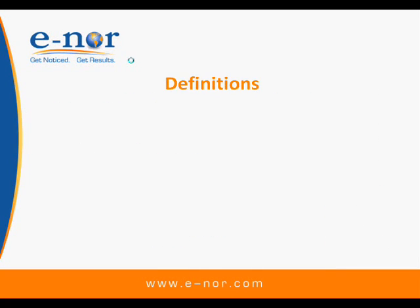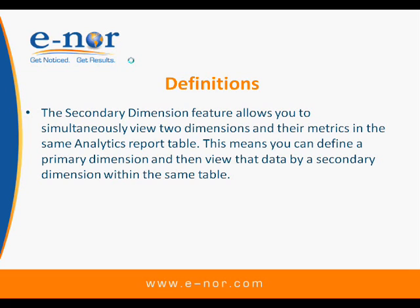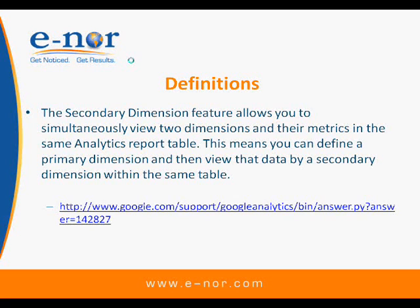So what are these things called Secondary Dimensions and Pivoting? Secondary Dimensions basically allows us to view more than one dimension at the same time. For example, we can simultaneously look at our keywords and the regions where those keywords came from — I can look at the metrics of these two dimensions in one view, in one table. This is very powerful, as you will see in the next few slides.